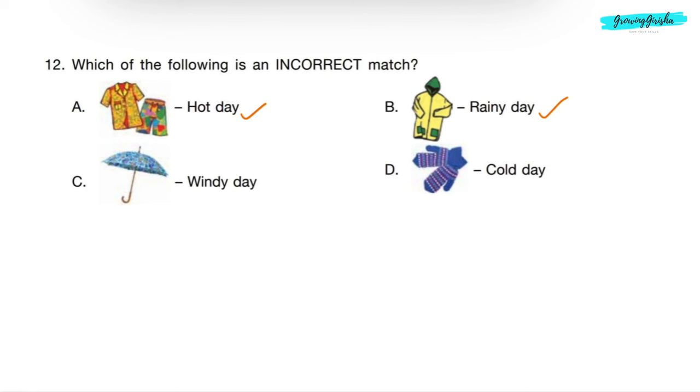Option C shows umbrella. We use umbrella to protect ourselves from rain. It is also used in summers to protect ourselves from sun rays. So option C is not the correct match - it is not used on a windy day. Option D shows gloves. Gloves are worn in winters, cold days. So this is also a correct match. Question is asking incorrect match, so option C is the incorrect match. Correct answer will be option C.